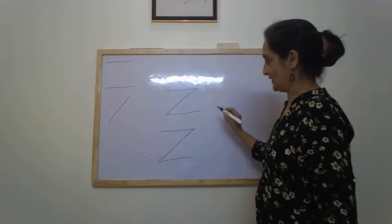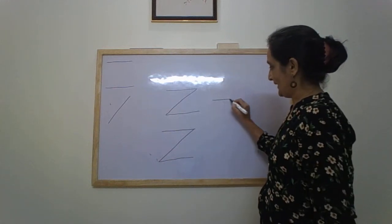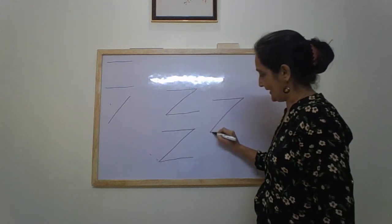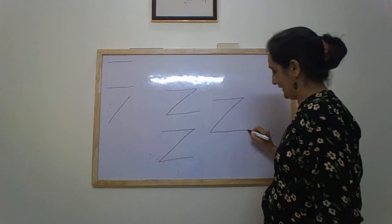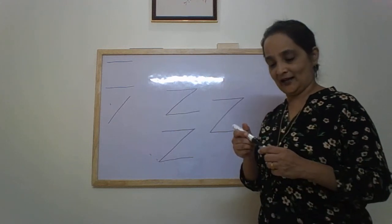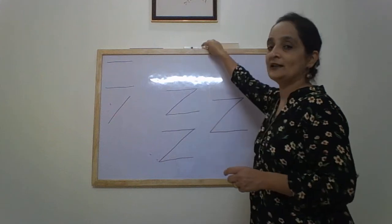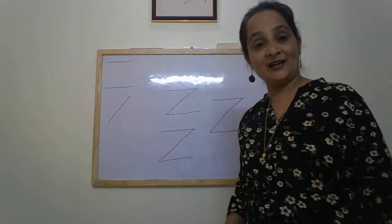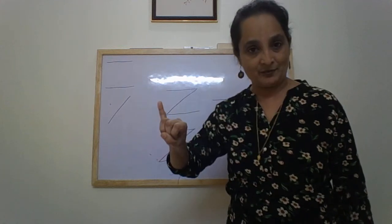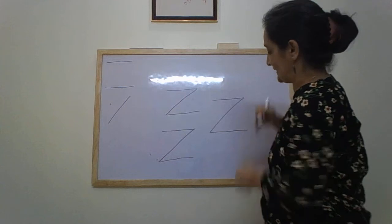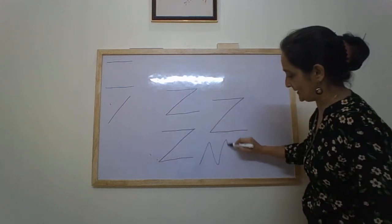One more time. Sleeping line, slanting line, and another sleeping line is letter Z. Z makes the sound Z. Z for zebra, zigzag. What is zigzag? Zigzag.